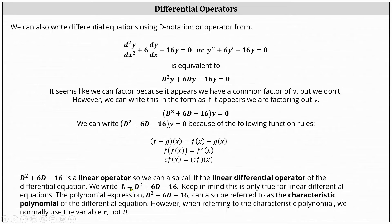We often write this as L equals capital D squared plus six capital D minus 16. Keep in mind this is only true for linear differential equations. The polynomial expression capital D squared plus six capital D minus 16 can also be referred to as the characteristic polynomial of the differential equation. However, when referring to the characteristic polynomial, we normally use the variable r, not capital D.